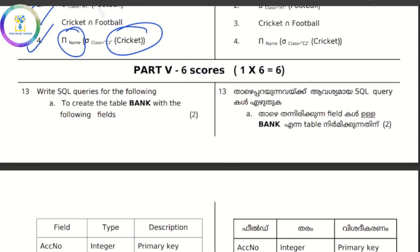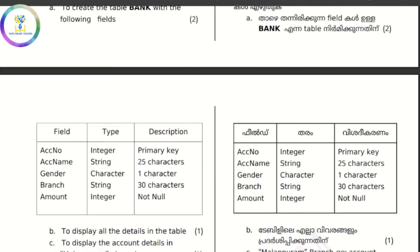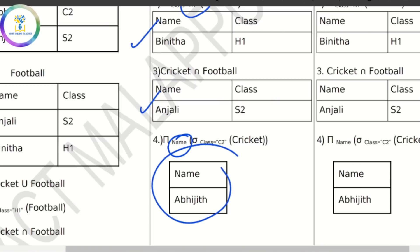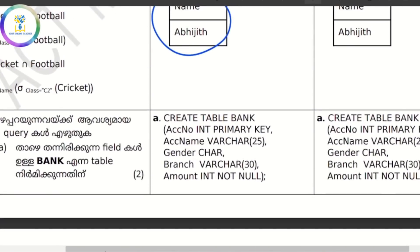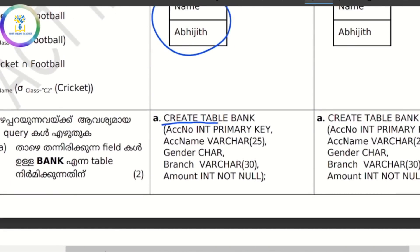Write SQL queries to create a table bank with the following fields: account number (type integer), account name (string), gender (character, string, 30 characters), amount (integer). We will create a table — it is simple, we will create a table bank.